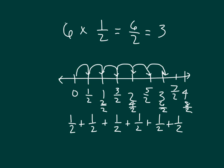One other thing you might have noticed is that we could combine a half and a half to get a whole. So if we draw parentheses in our repeated addition, it would be 1, 2, and 3.